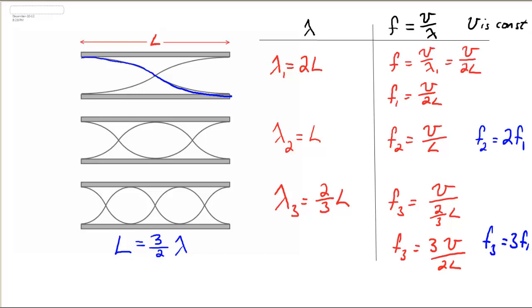So you can see a pattern. F2 is 2F1, F3 is 3F1, F4 will be 4F1, etc.